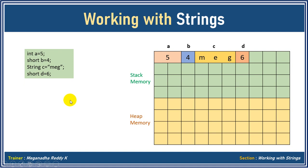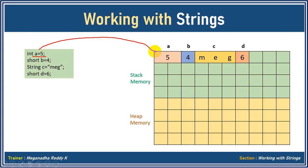Now when I write int a = 5, we all know that integer takes four bytes. Let's assume each cell here takes two bytes. So it'll take two cells because each cell is two bytes, and it'll be stored like this. Now when I declare short b = 4 — short takes two bytes of memory — so it's taking one cell here and b is storing four.